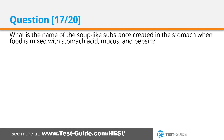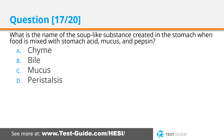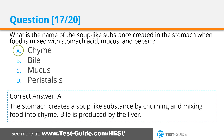Question seventeen: What is the name of the soup-like substance created in the stomach when food is mixed with stomach acid, mucus, and pepsin? Options: chyme, bile, mucus, peristalsis. Correct answer A. The stomach creates a soup-like substance by churning and mixing food into chyme. Bile is produced by the liver.